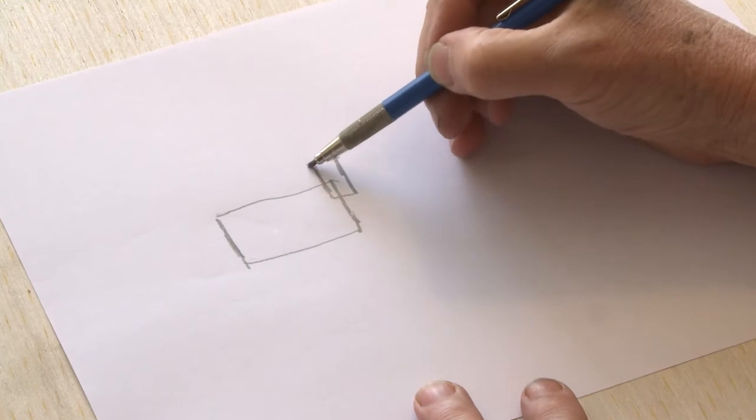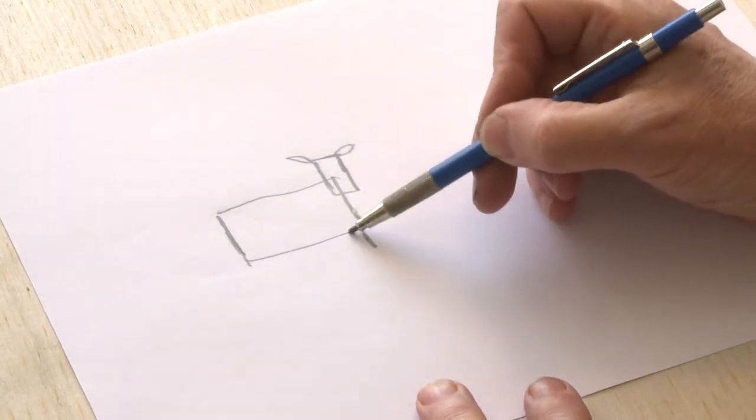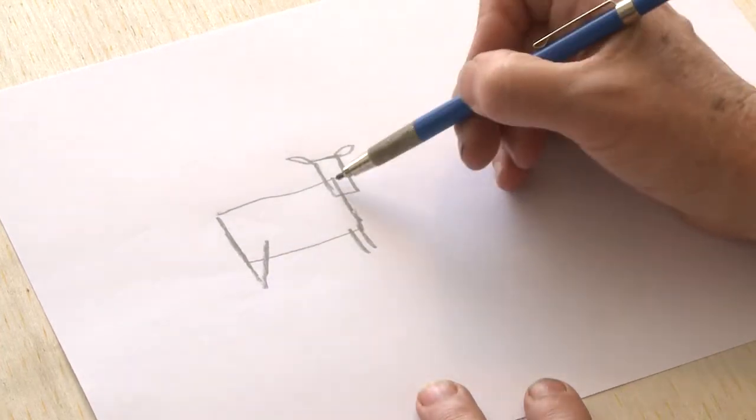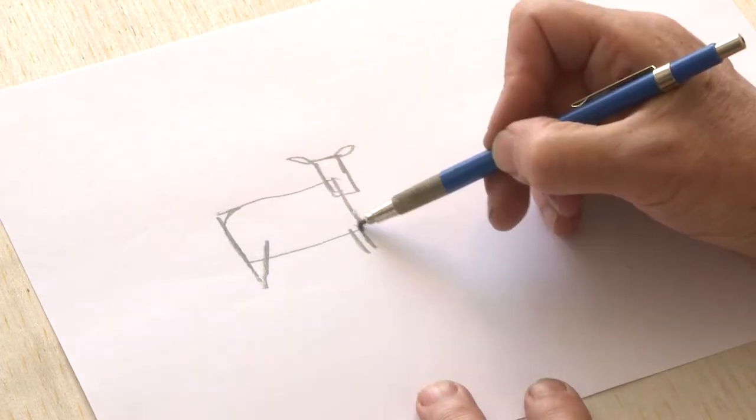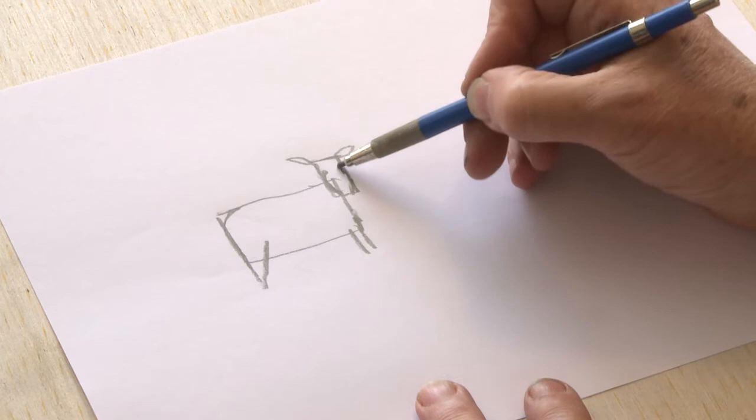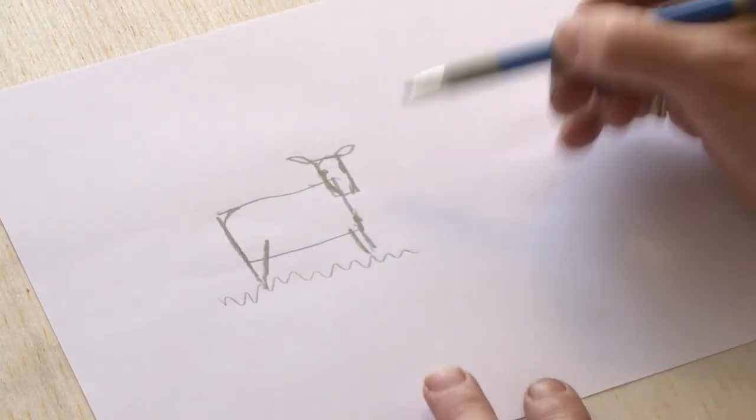A couple of ears, big ears coming out the side there, a couple of legs at the front, and a slightly more triangular one at the back, and then once you've got that shape, just round it off a little bit. Eyes on the side of the head there, and you've got a cow on the field.